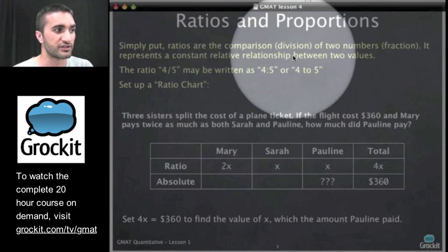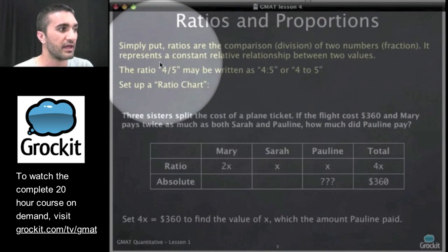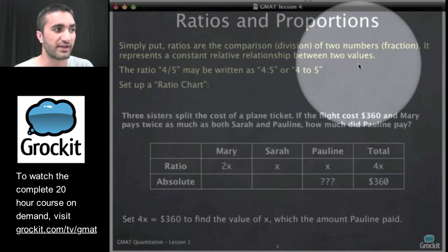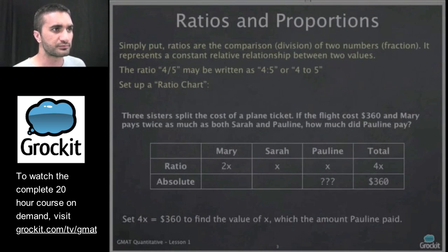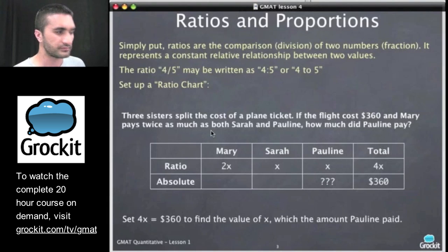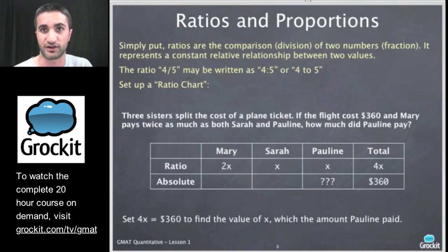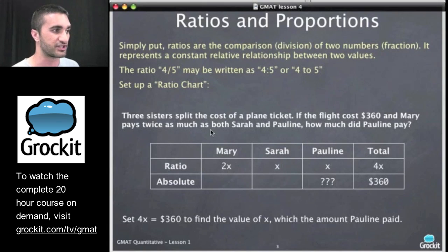So simply put, ratios are comparing two numbers, and they represent a constant relative relationship between two values. So what we want to do for ratio and proportion questions is again to organize ourselves as an information management challenge.